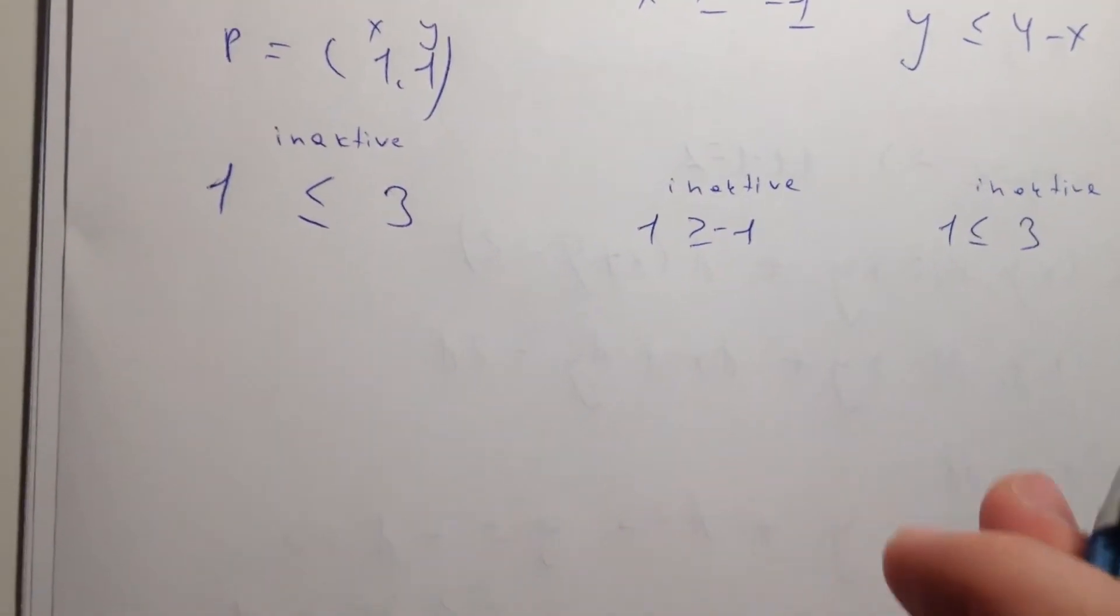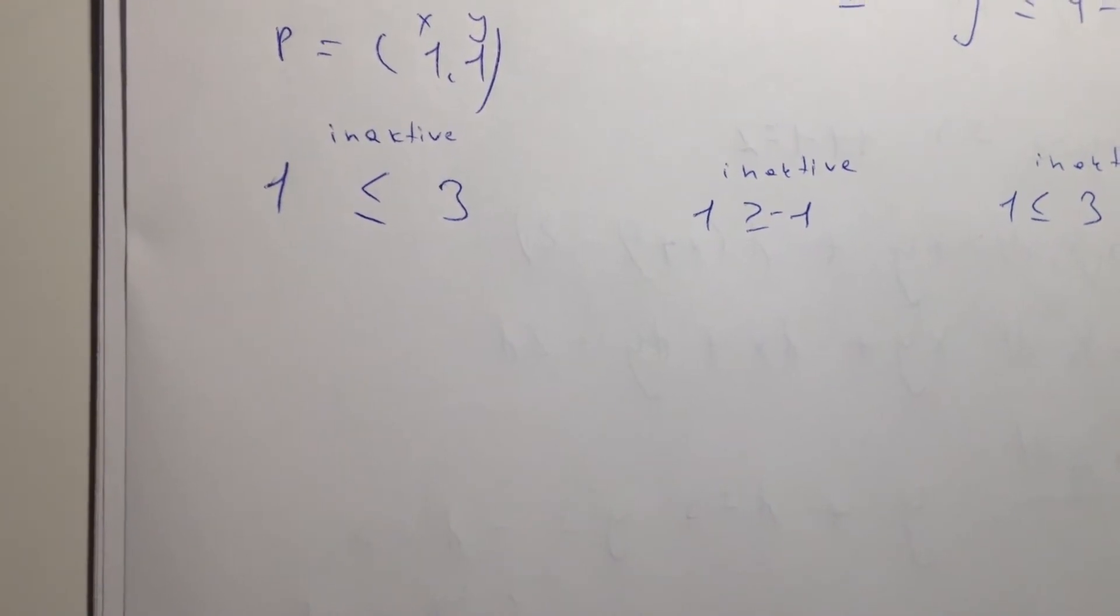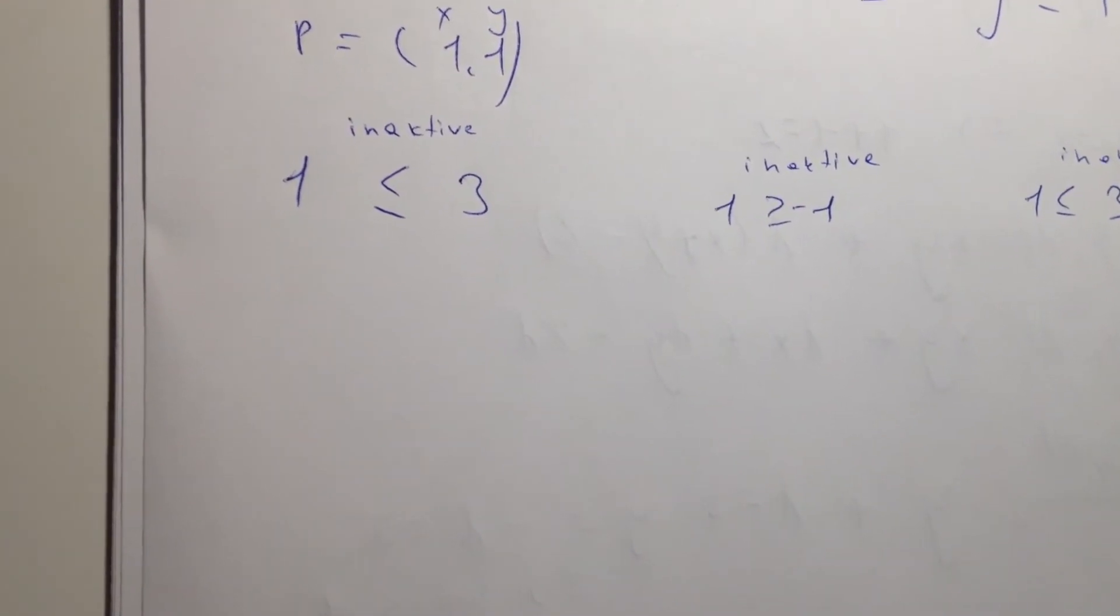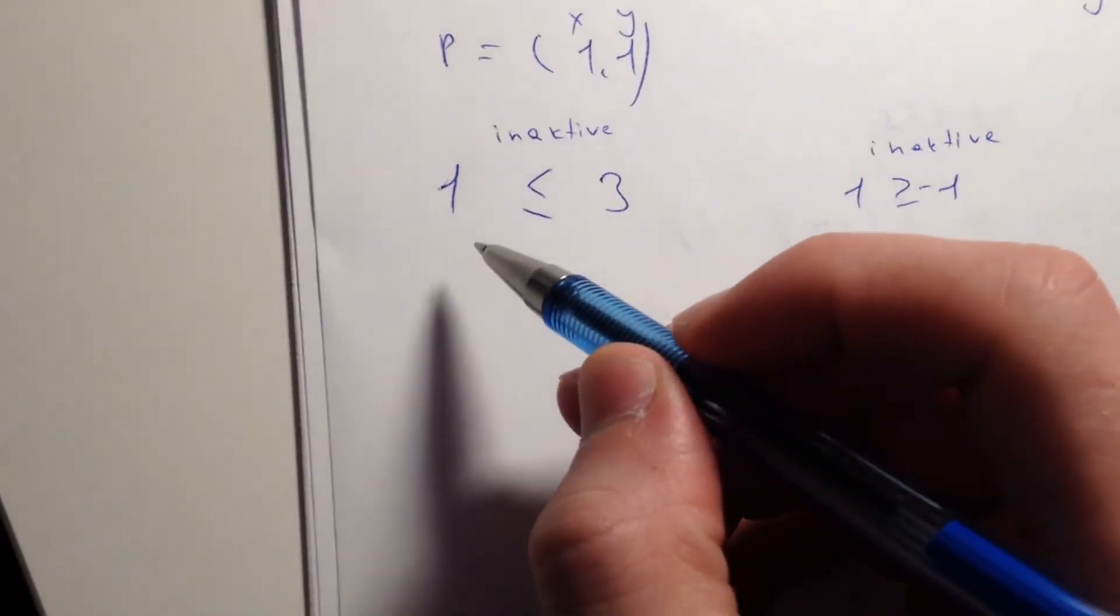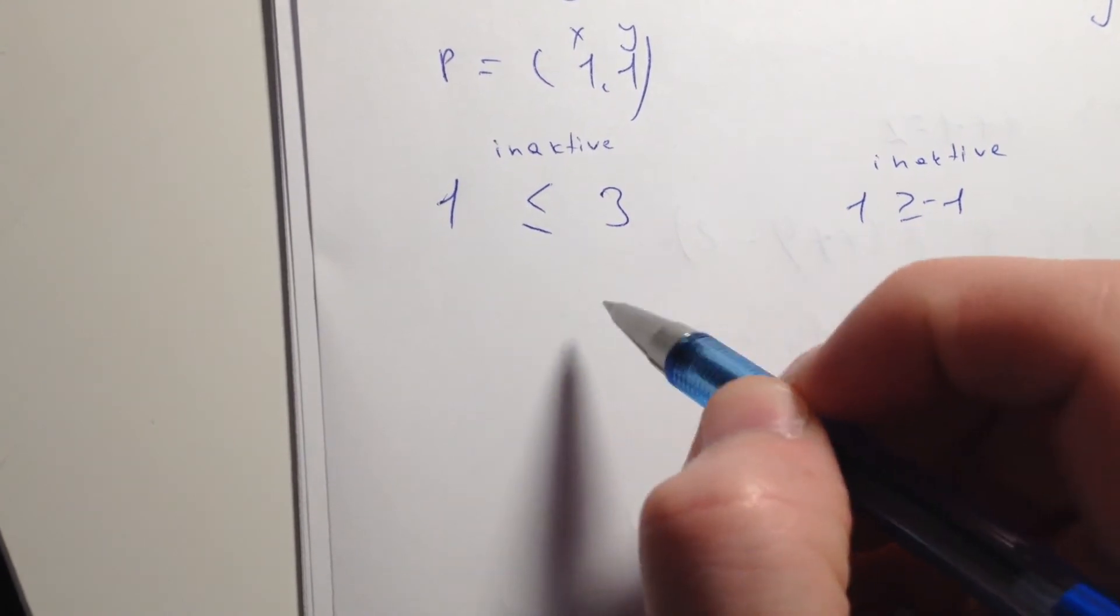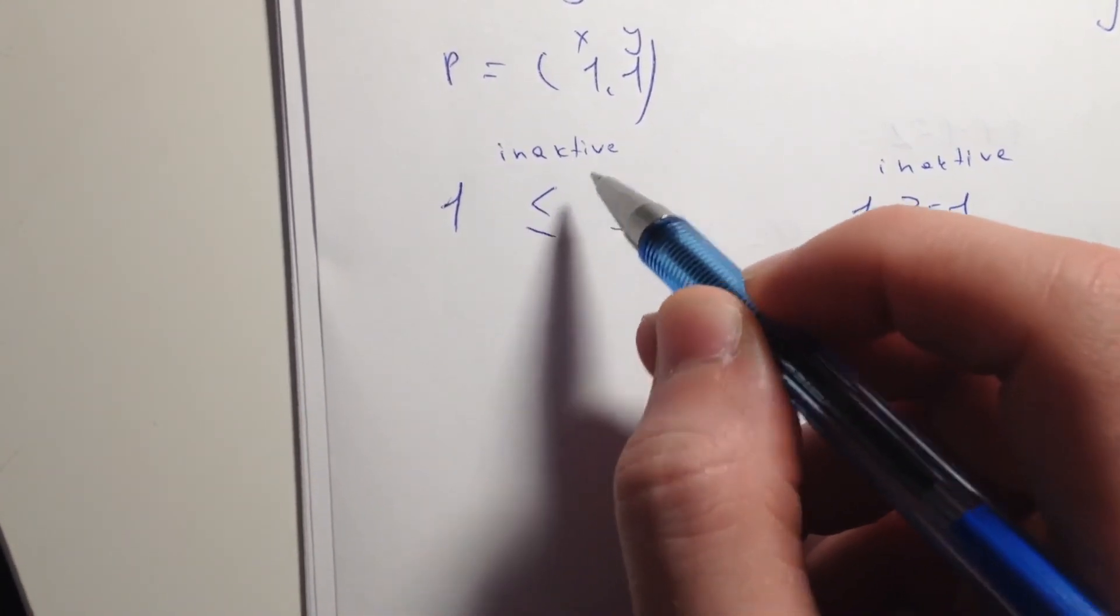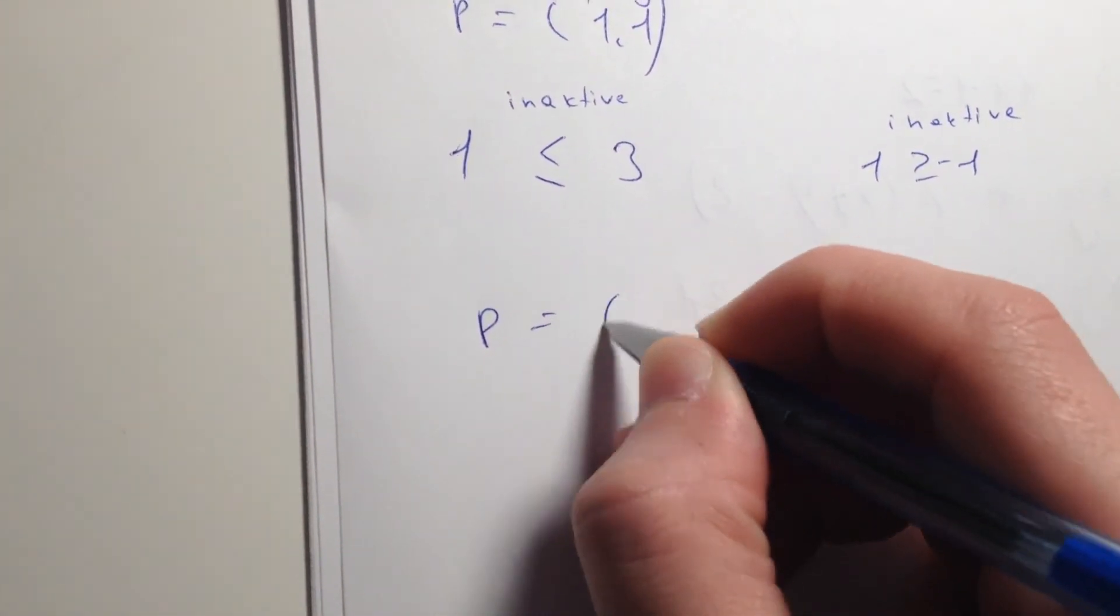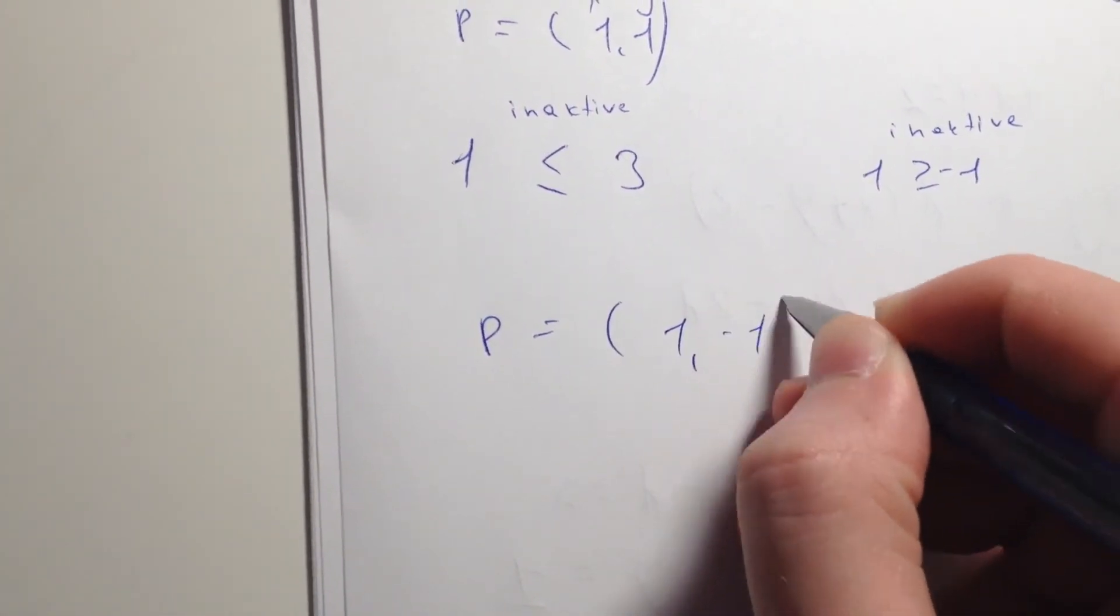Because active constraints are those constraints that are equal to the number that it represents. For example, if x1 were equal to 1, then it would be active. So the second point is going to be (1, -1).